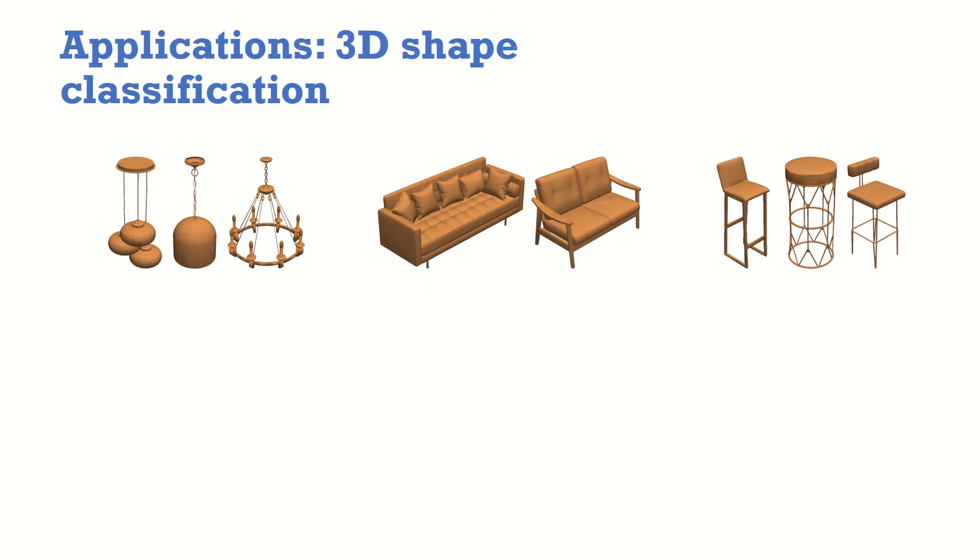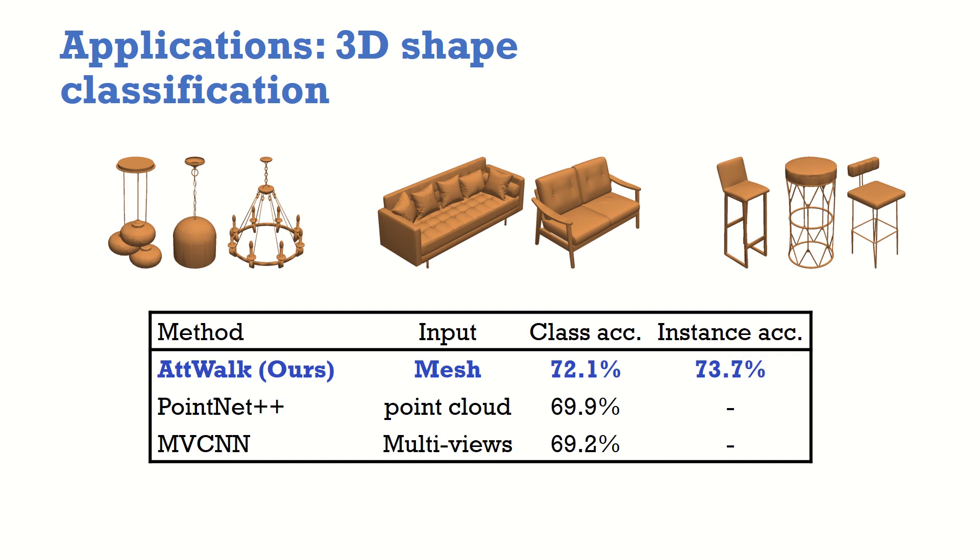We apply our model to two applications. The first application is 3D shape classification. The goal is to classify a given mesh into one of predefined classes. We tested our approach on three datasets and achieved state-of-the-art results. You can see here results on the new challenging dataset, 3D Futures.